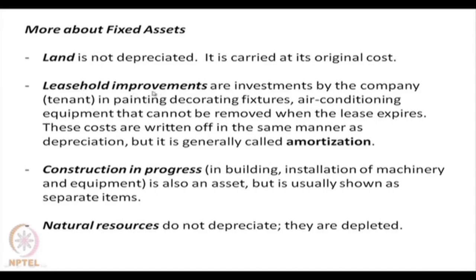For example, suppose a company has taken a building on lease for five years. During the lease period it might spend a certain amount to make the building habitable and usable. When the lease expires, the fixtures, air conditioning or painting that was done cannot be undone. So this amount invested in leasehold improvement activities is treated as a fixed asset and, like machinery, it is also depreciated over five years — this process is generally called amortization instead of depreciation.